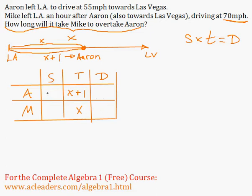And speed, Aaron is driving at 55, Mike at 70. Distance is speed times time. So speed times time for Aaron is 55 times x plus one. And distance for Mike is 70 times x.